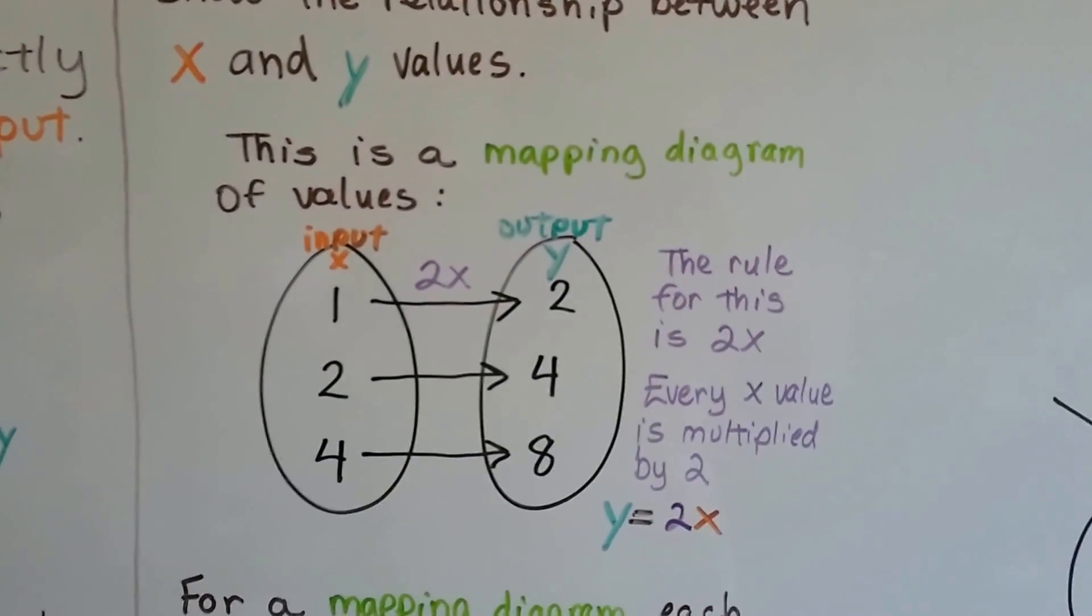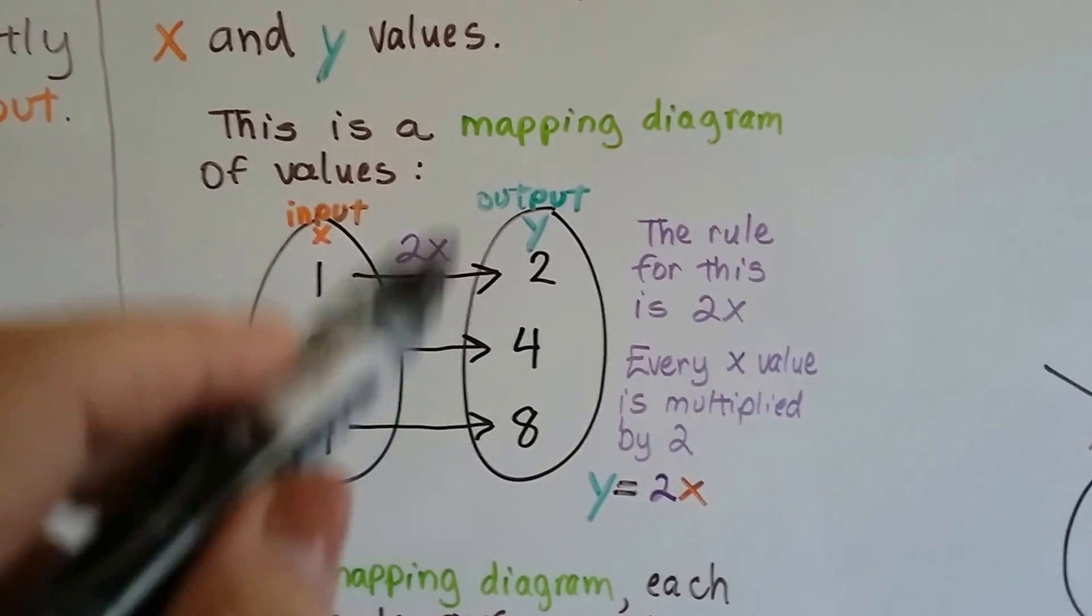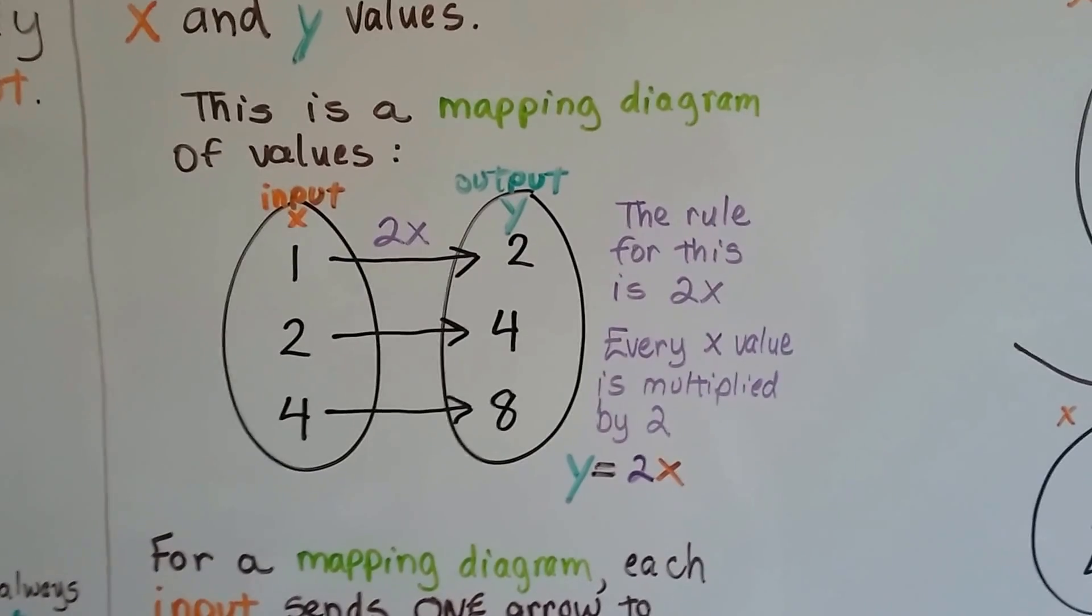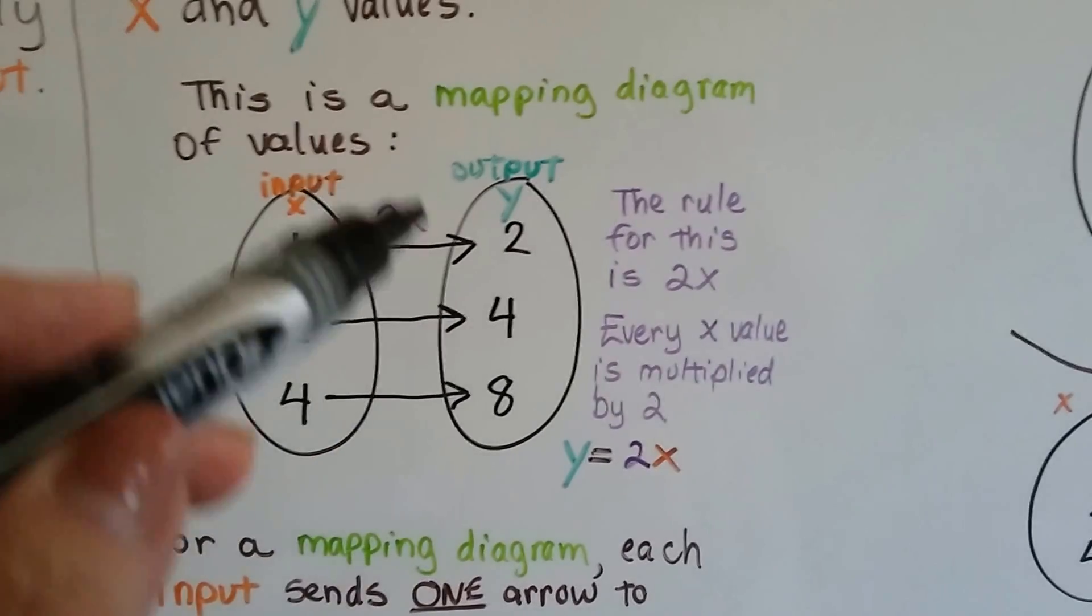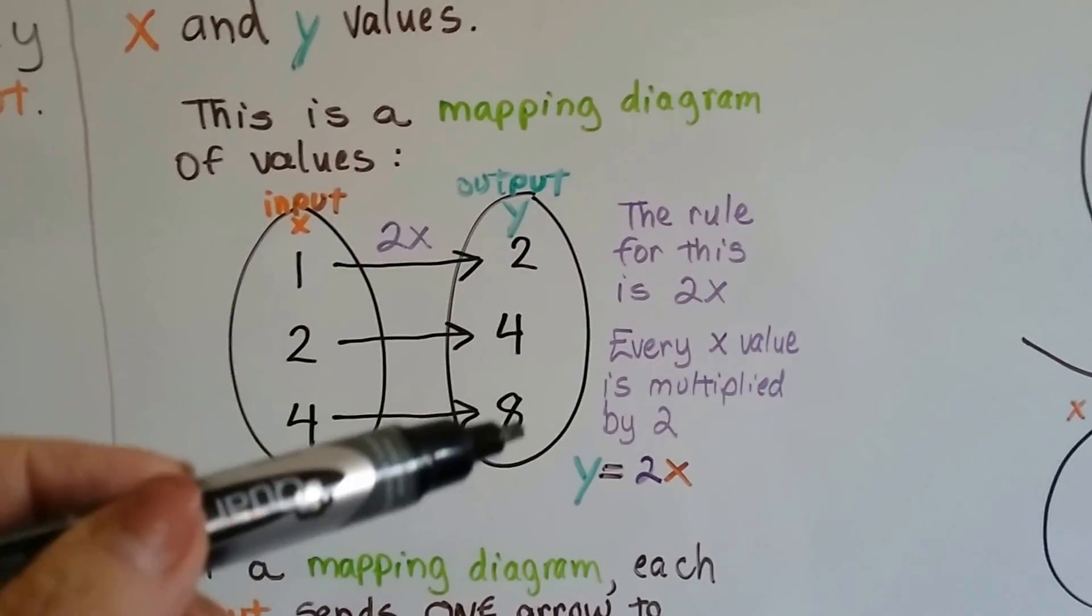So this is a mapping diagram of values, and it's a 2x relationship. That's the rule. So the rule is 2x. Every x value is multiplied by 2. 1 times 2 is 2. 2 times 2 is 4. 4 times 2 is 8. So for each input, there's an output.